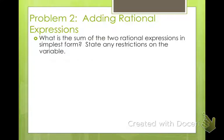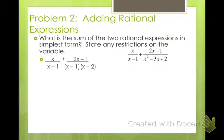Adding rational expressions. Here we get into some real meat and potato stuff. What is the sum of the two rational expressions in simplest form? State any restrictions on the variables. So I have x/(x-1) plus (2x-1)/(x²-3x+2). Okay, now in order to add fractions, they need to have a common denominator. Right now, we have one common denominator is x-1. Okay, let's go ahead and factor this one. That denominator is (x-2)(x-1), which I have right here.